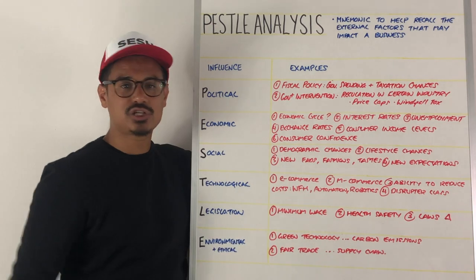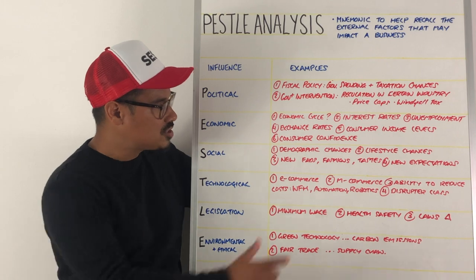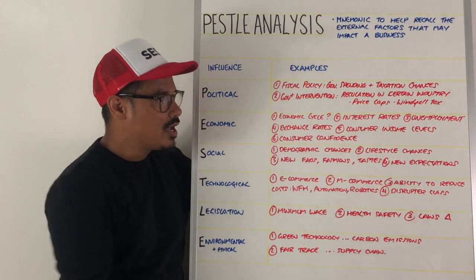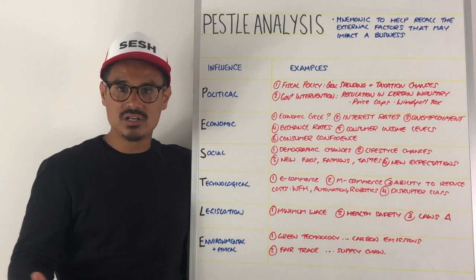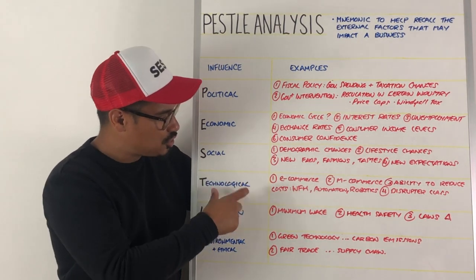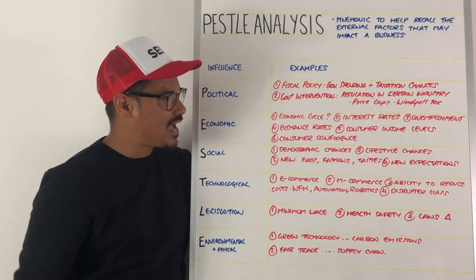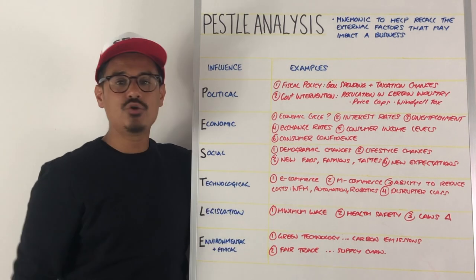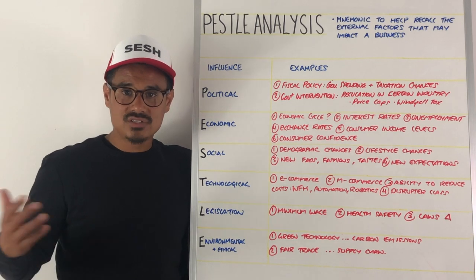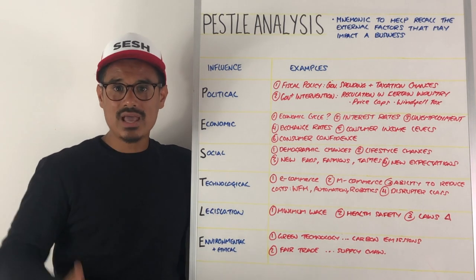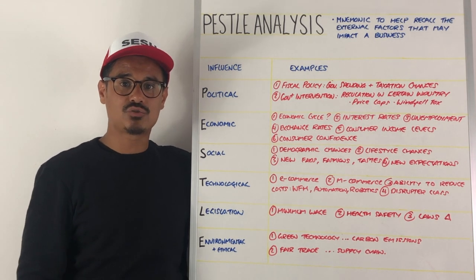Social factors include demographic changes — in the UK we have an aging population and significant immigration. Number two is lifestyle changes: busier lifestyles have suited e-commerce and m-commerce. There are always new fads, fashions, tastes, and expectations about what society expects. For instance, with certain companies we now expect delivery as soon as possible — we want that instant nature in our deliveries.